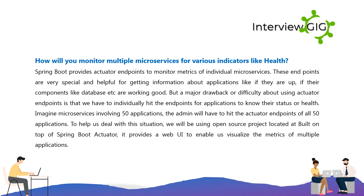How will you monitor multiple microservices for various indicators like health? Spring Boot provides actuator endpoints to monitor metrics of individual microservices. These endpoints are helpful for getting information about applications — like if they are up and if their components like databases are working. However, a major drawback is that we have to individually hit the endpoints for each application. Imagine microservices involving 50 applications — the admin would have to hit the actuator endpoints of all 50.